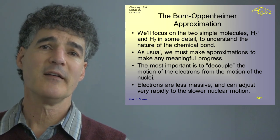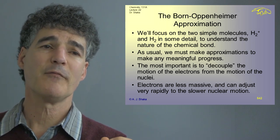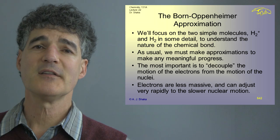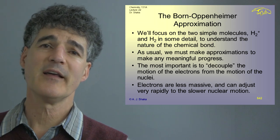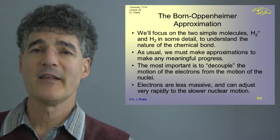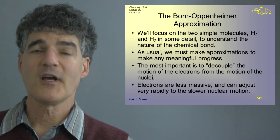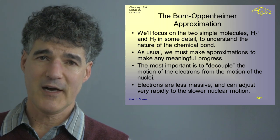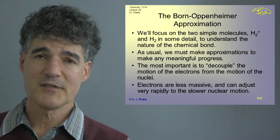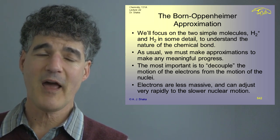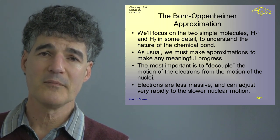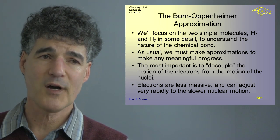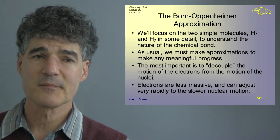We can go one step further and say: suppose we just stop the motion of the nuclei and solve for the electrons. That we can do. And that's essentially what the Born-Oppenheimer approximation is.